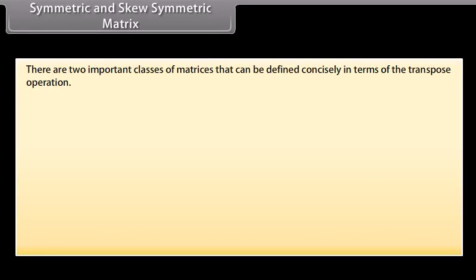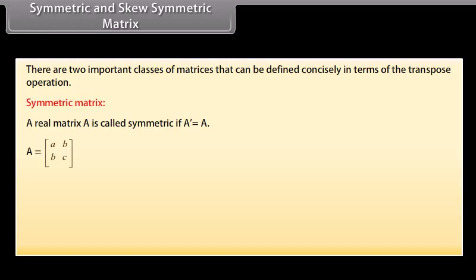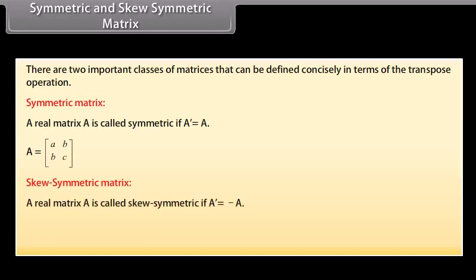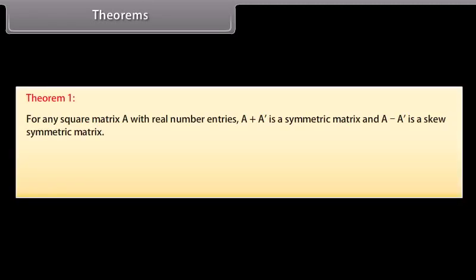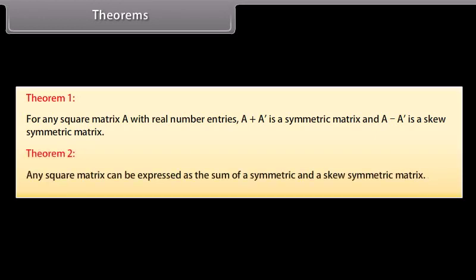Symmetric and skew-symmetric matrix. There are two important classes of matrices defined in terms of the transpose operation. A real matrix A is called symmetric if transpose of A equals A. A is a general 2×2 symmetric matrix. A real matrix A is called skew-symmetric if transpose of A equals minus A. Theorems: for any square matrix A, A plus A' is a symmetric matrix and A minus A' is a skew-symmetric matrix. Any square matrix can be expressed as the sum of a symmetric and a skew-symmetric matrix.